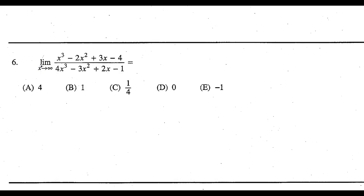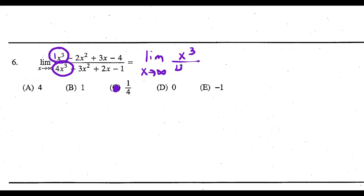For question 6, we're taking a limit as x goes to infinity of a rational function. When taking limits at infinity, the leading terms are the most important — the highest power of x on top and bottom. You can eyeball this as 1 over 4. More formally, take the limit of x to the third over 4x to the third; the x cubed terms cancel, leaving coefficients 1 over 4. That's choice C.